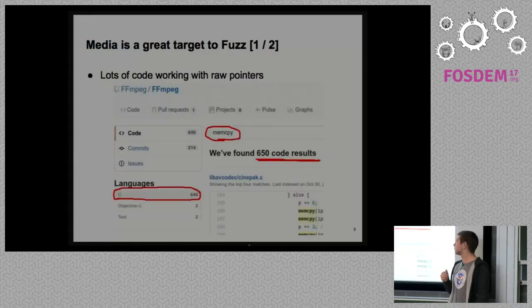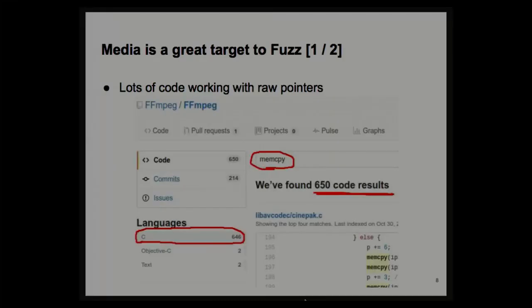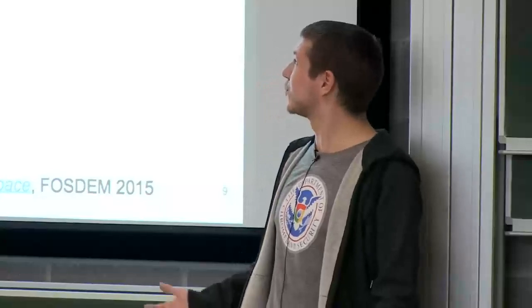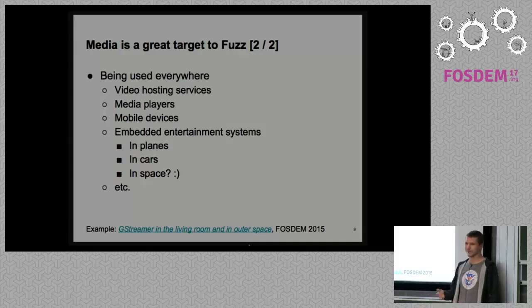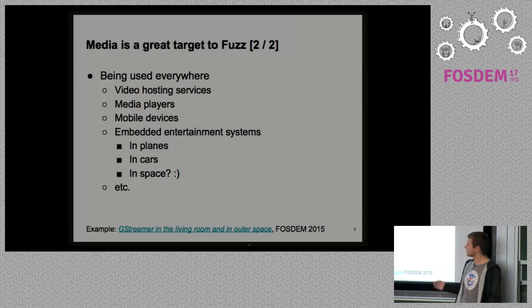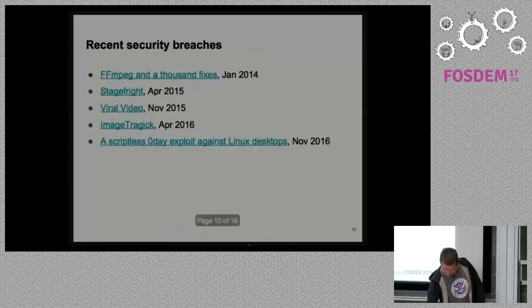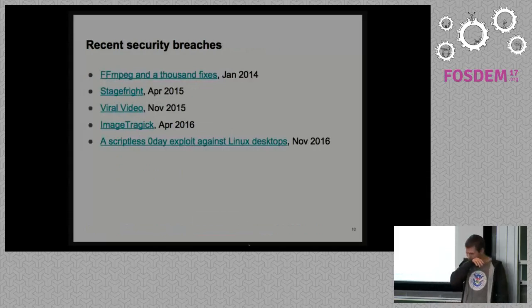Why are media projects written in C and C++ good targets for fuzzing? Basically because they have a lot of code working with raw memory, and if it's C++, there can be complex logic with objects — and if you write it, you definitely know how many troubles you may have. Another point: media processing is used everywhere. Any device with a battery and Wi-Fi connection definitely has several codecs and libraries for decoding media.